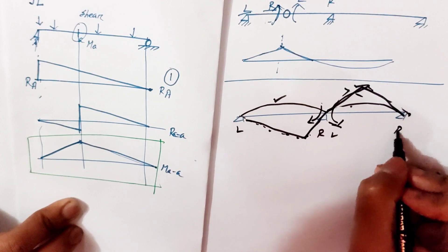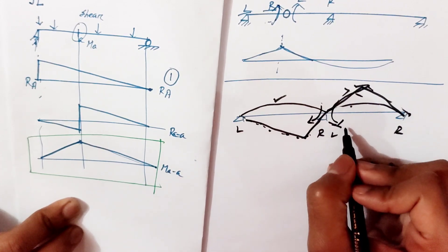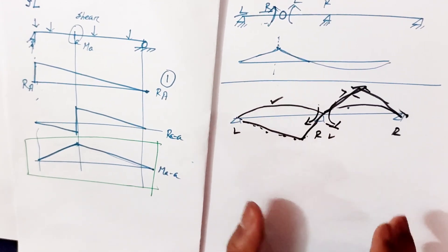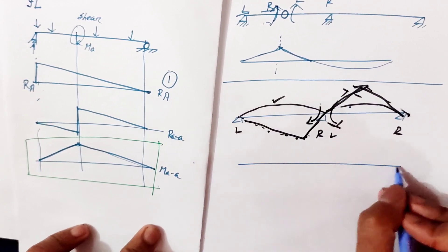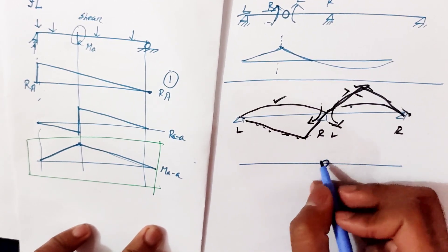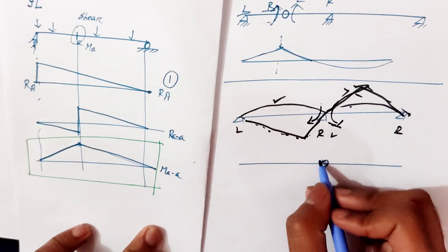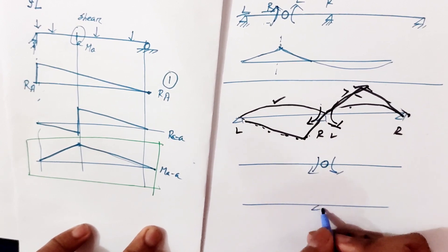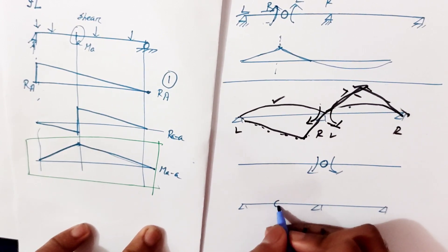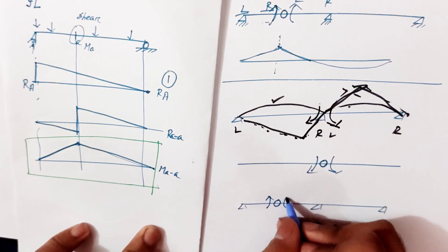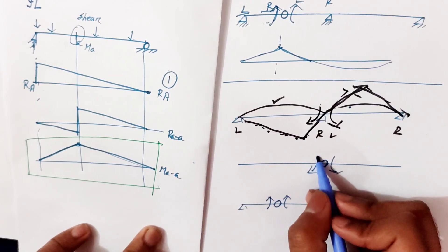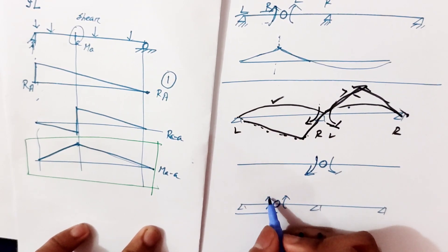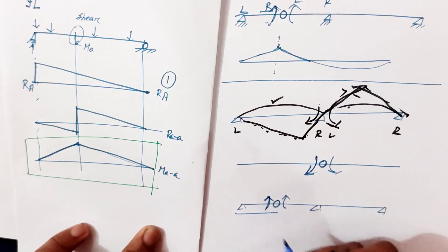On the left side, we have a clockwise moment applied here. The moment is applied in this way using the normal conjugate beam convention, and here the reaction is the support reaction.